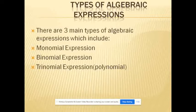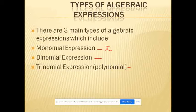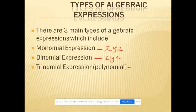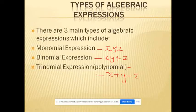There are three main types of algebraic expressions: monomial expression — an expression which consists of only one term; binomial expression — an expression which consists of two terms; and trinomial expression — an expression which consists of three terms. From the examples you come to know what is meant by each type.